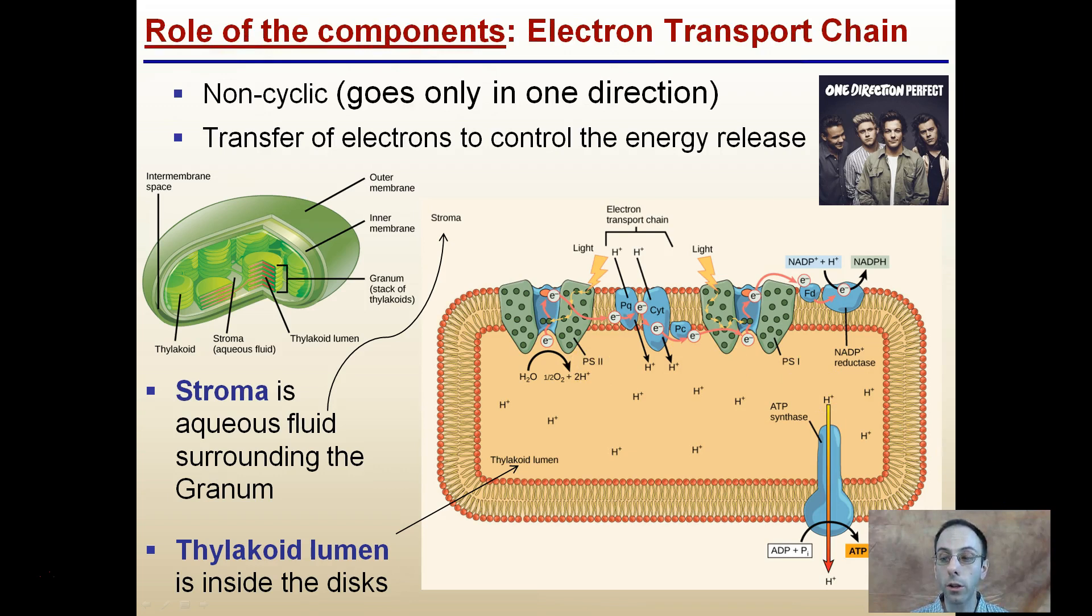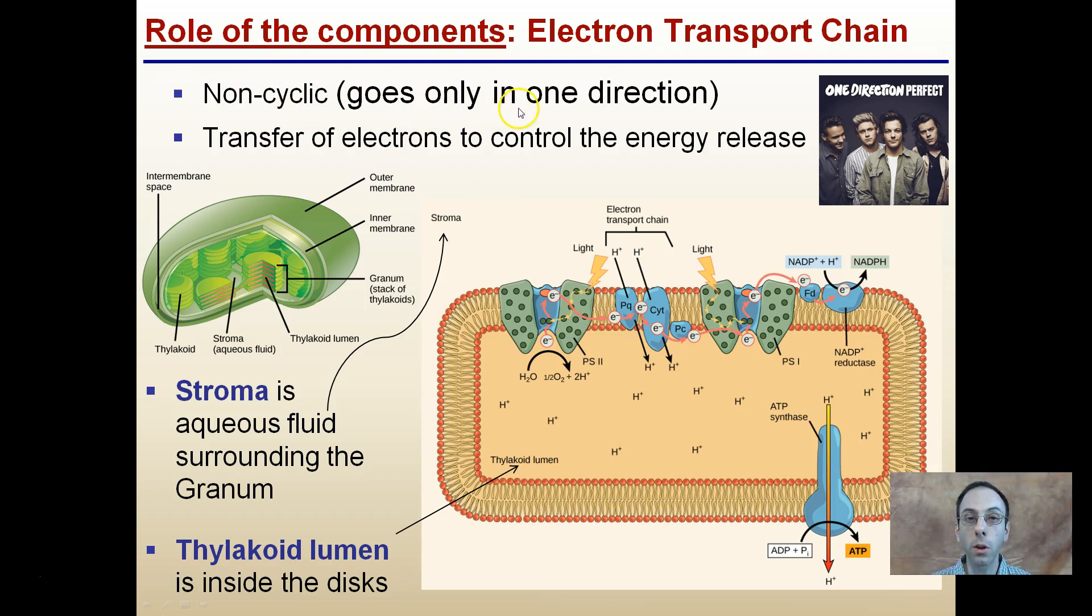Now, the role of the components are the electron transport chain. So our electron transport chain, it's non-cyclic, meaning it only goes in one direction. Try to put a picture here of one direction to help you realize that this particular electron transport chain is only progressing in one direction.